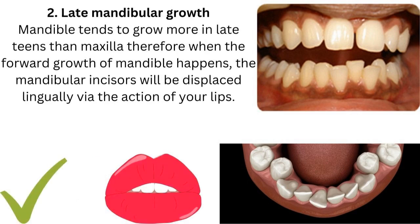The last acceptable theory is late mandibular growth. The mandible tends to grow more in late teens than the maxilla. Therefore, when the forward growth of the mandible happens, the mandibular incisors will be displaced lingually — via the action of your lips.